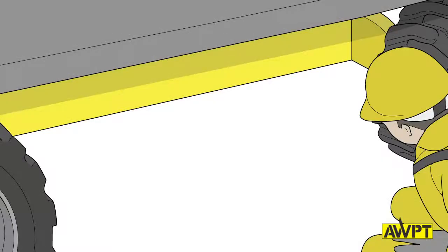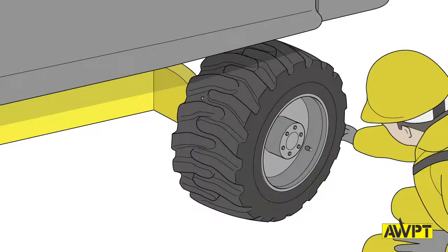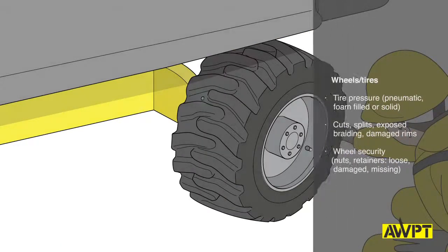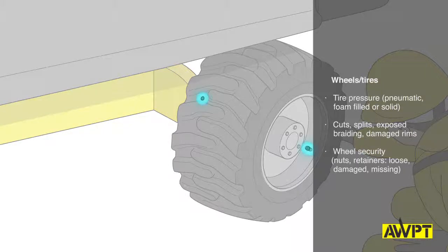Check the ground for oil under the machine. This can often be the first hint of a potential problem. Inspect the tires remembering that some solid or foam filled tires may have a bolt head showing opposite the valve.